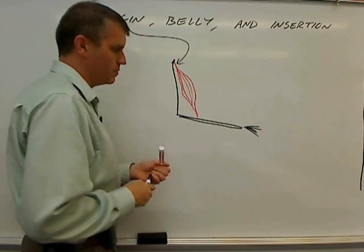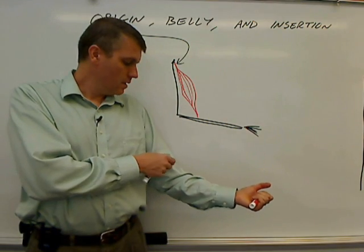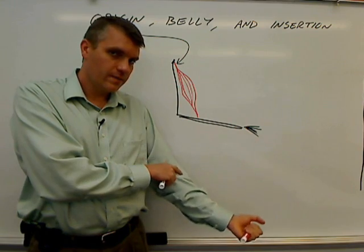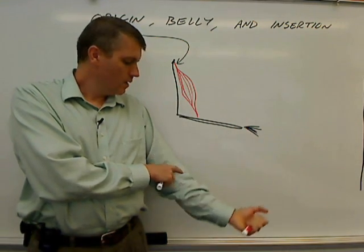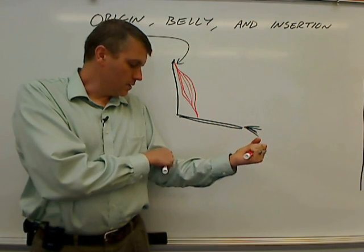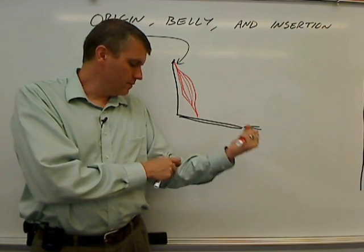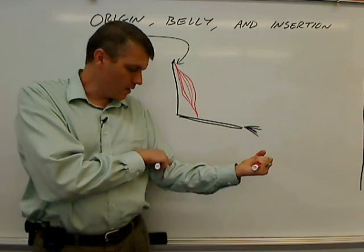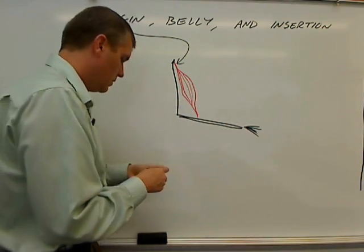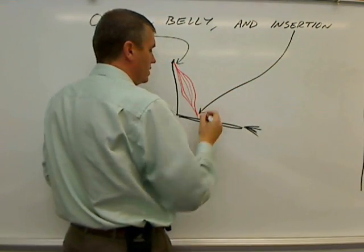The insertion for any skeletal muscle is onto the part of the body that's moving. So for the biceps brachii, it's going to insert onto the forearm — the radius and the ulna. You can tell physically where it's inserting: it's down here, towards the medial end of the radius and ulna.